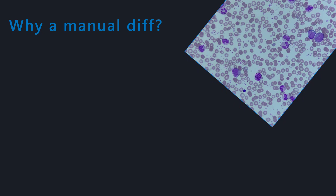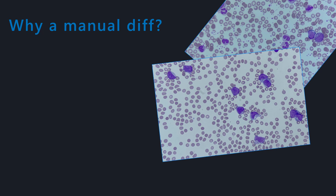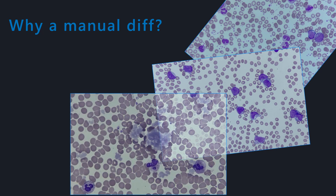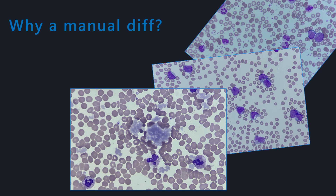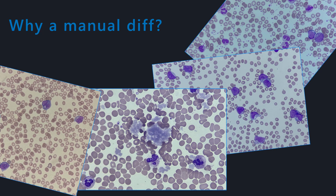Before we get stuck into how to perform a manual white cell differential count, it is probably useful to understand why we'd want to do one in the first place. Depending on the technology used, the analyzer is able to identify white cells based on their size and granularity. This is how it determines the number of cells for the five cell auto differential. It's also able to flag if there may be immature granulocytes or blast cells present, but it cannot identify what types.